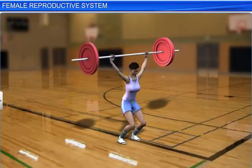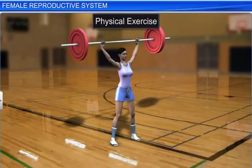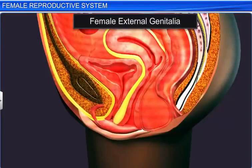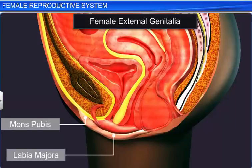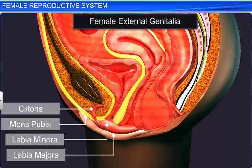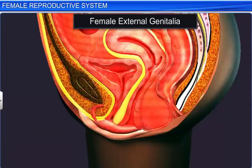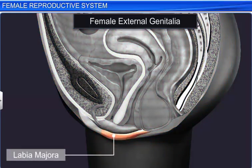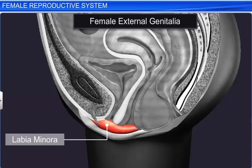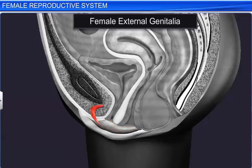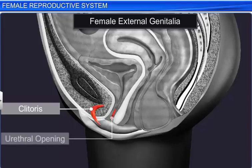The hymen is frequently ruptured in childhood due to strenuous physical exercise. The female external genitalia includes the mons pubis, labia majora, labia minora, and the clitoris. The labia majora consists of fleshy folds of tissue that extends down from the mons pubis and surrounds the vaginal opening. Hidden under the labia majora is the labia minora. Towards its upper end lies the clitoris, a small finger-like structure, and below it is the urethral opening.